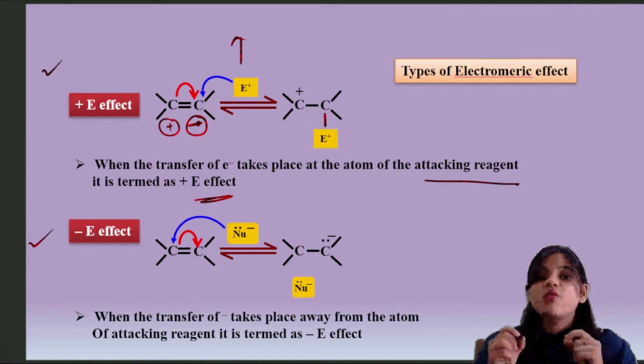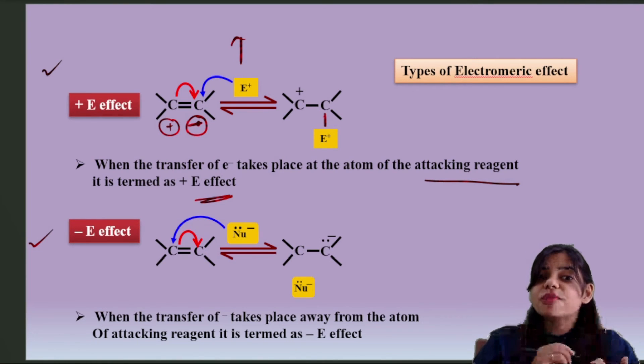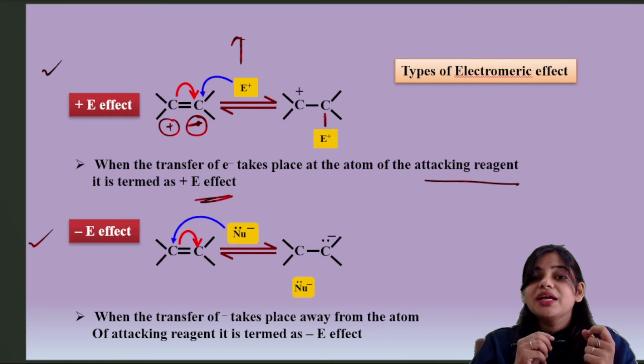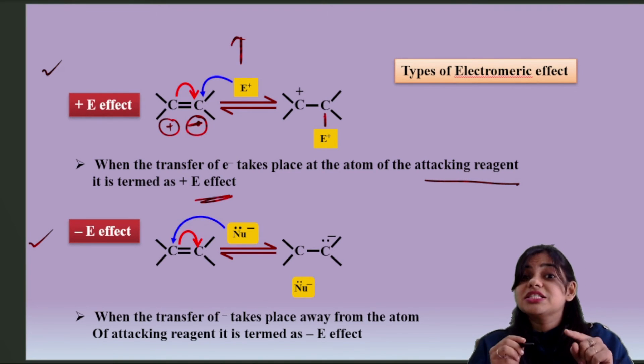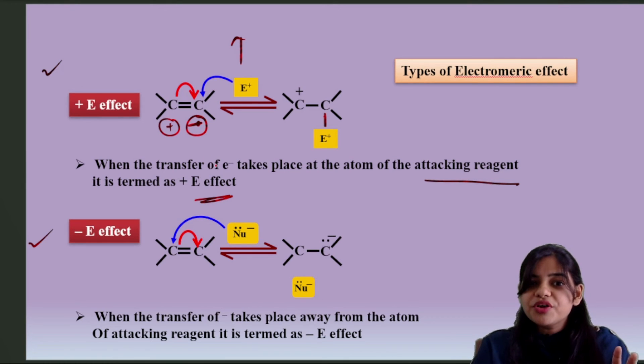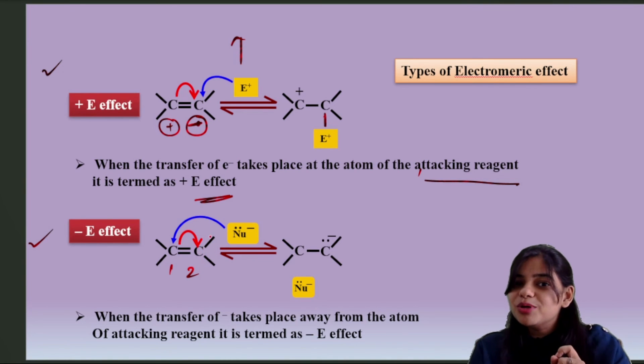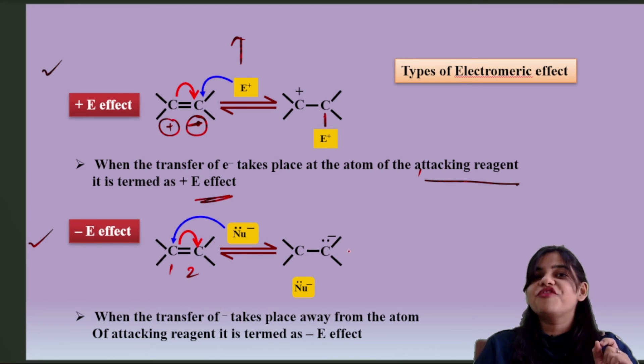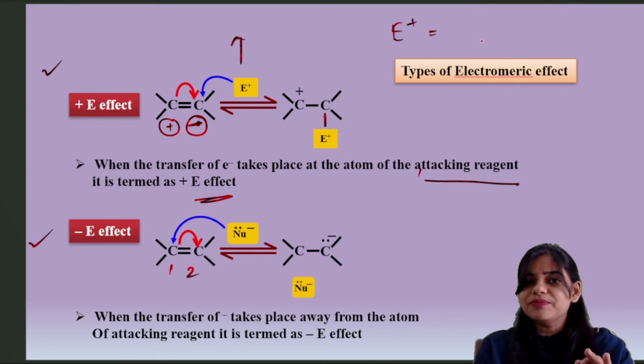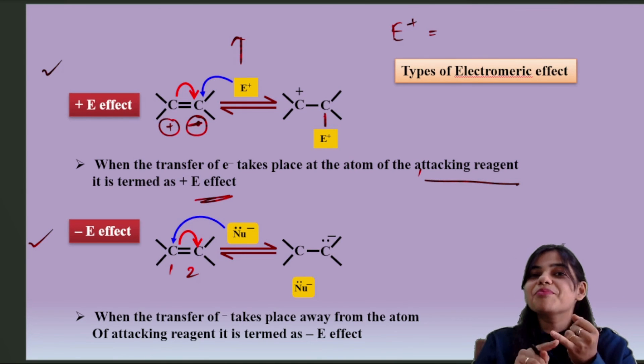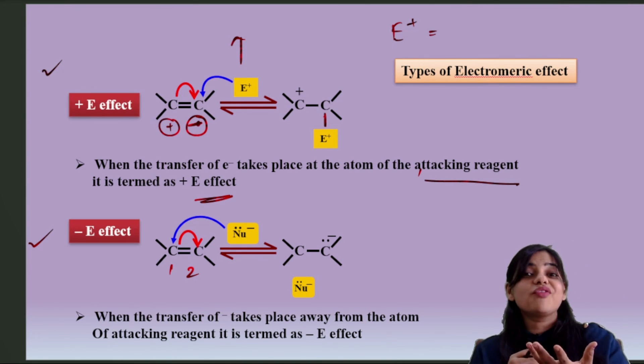Whereas negative E effect is when the transfer of electron takes place away from the atom of attacking reagent. So if you see this arrow here, the red arrow, if I number it, electrons are going to carbon number two. So the atom where attack is not happening, there the nucleophile or electrons go and sit. So basically when electrophile is attacking, we get an atom which shows positive inductive effect. And negative inductive effect is when nucleophile attacks. So complete electromeric effect would be: it's a temporary effect when it is seen only when some electrophile or nucleophile attacks.